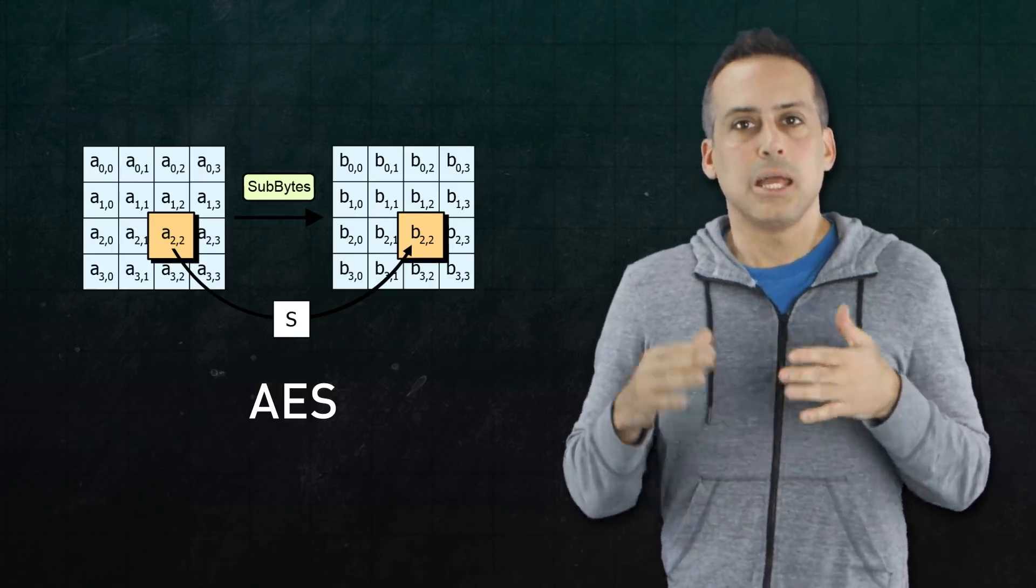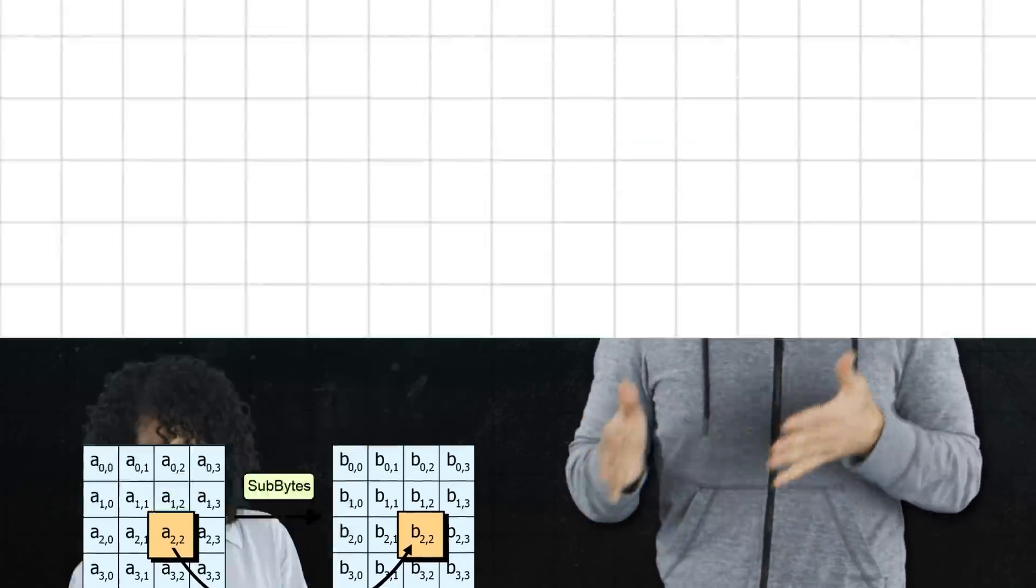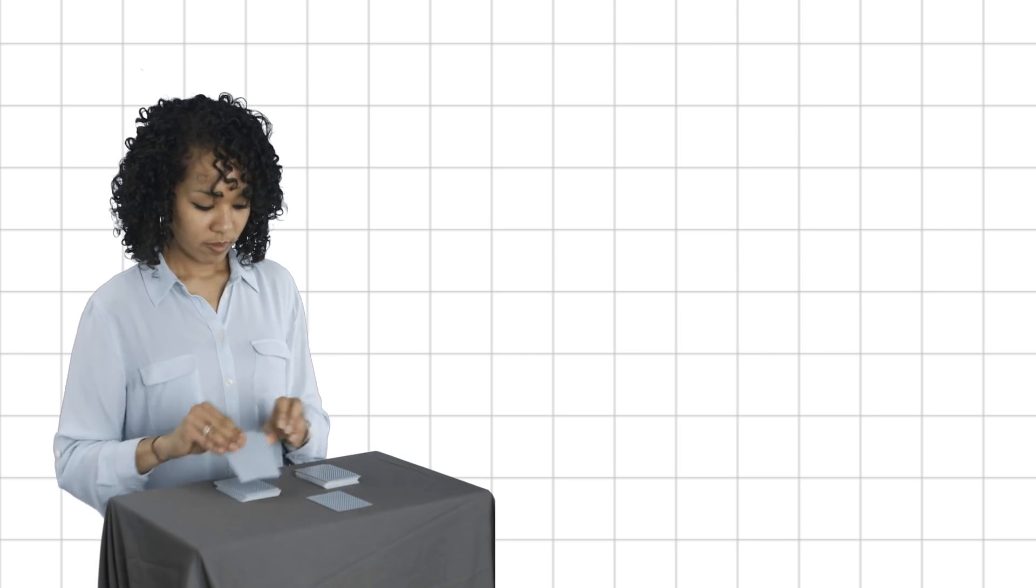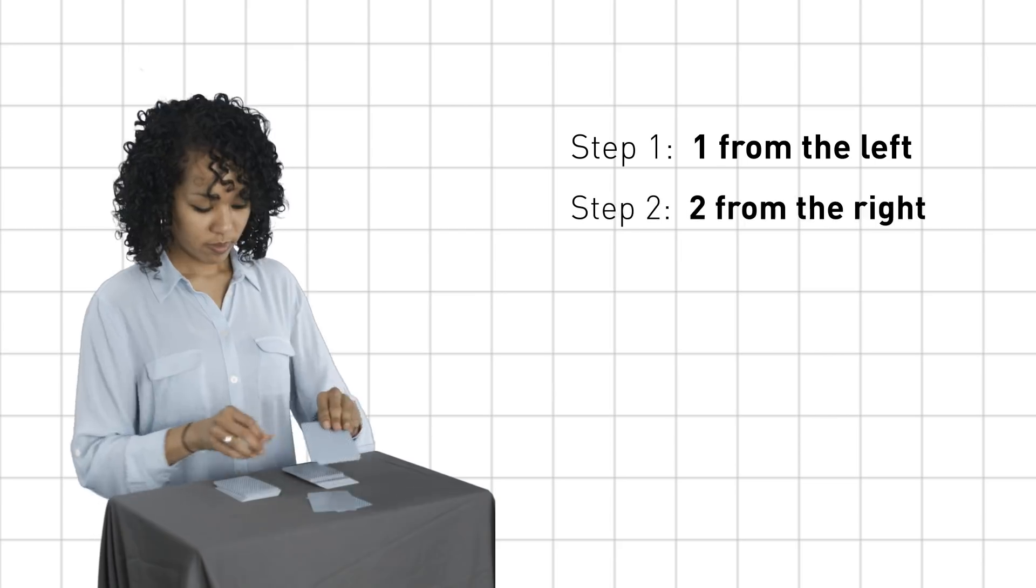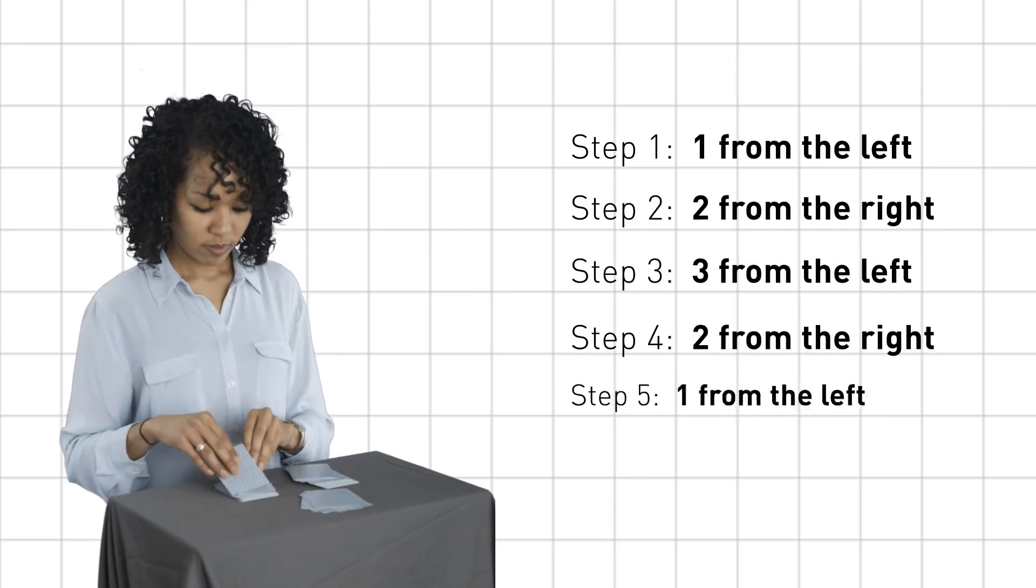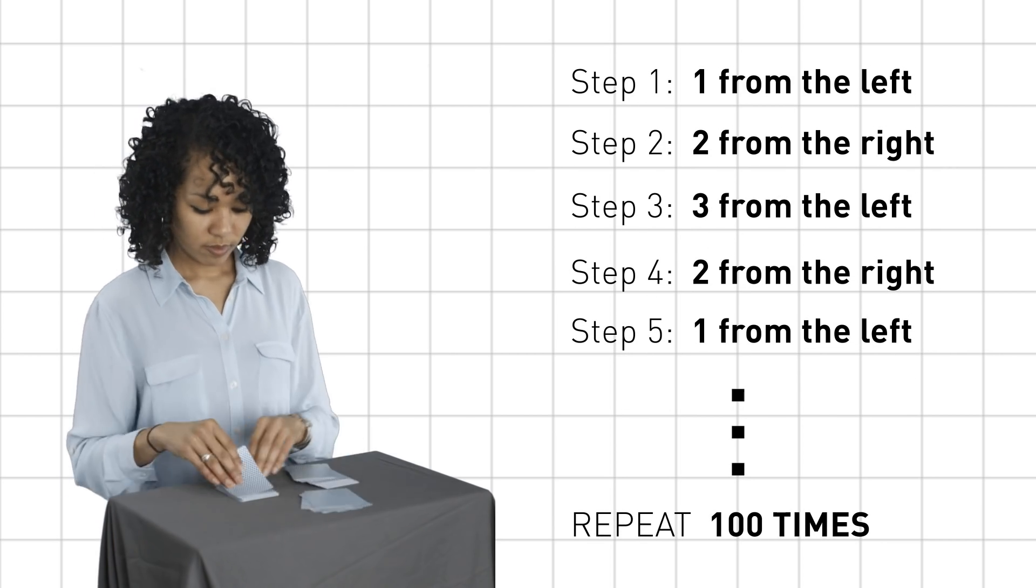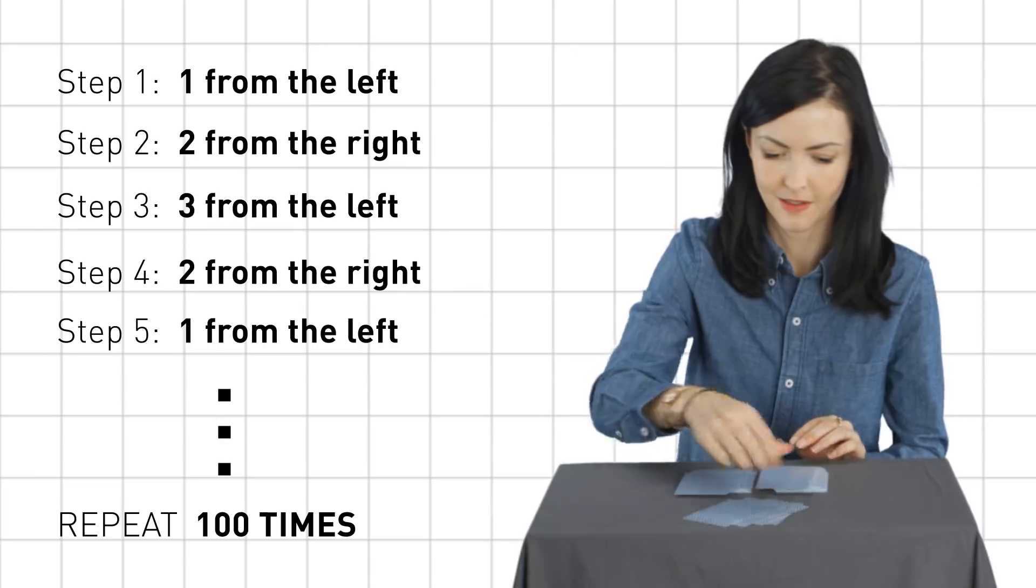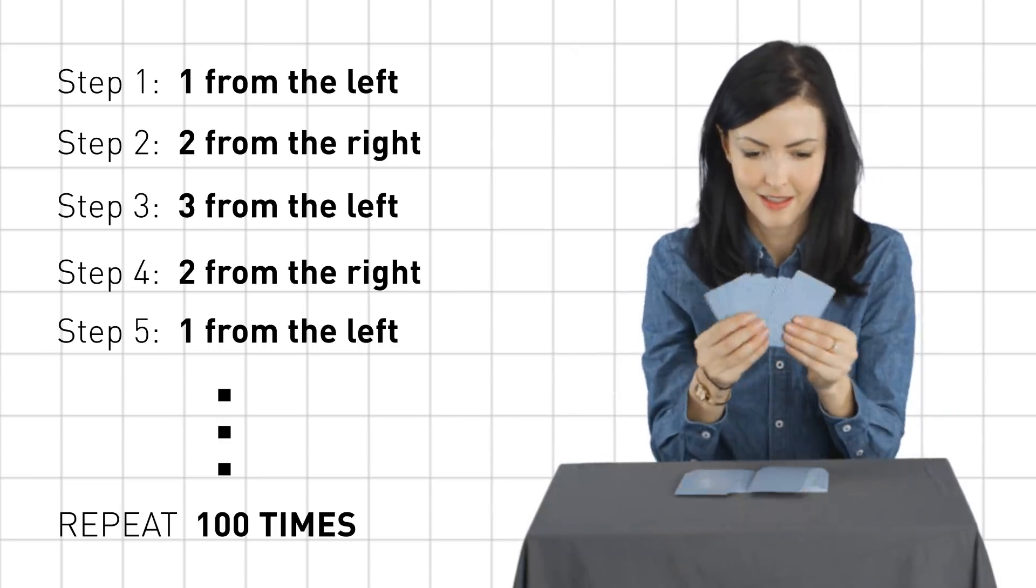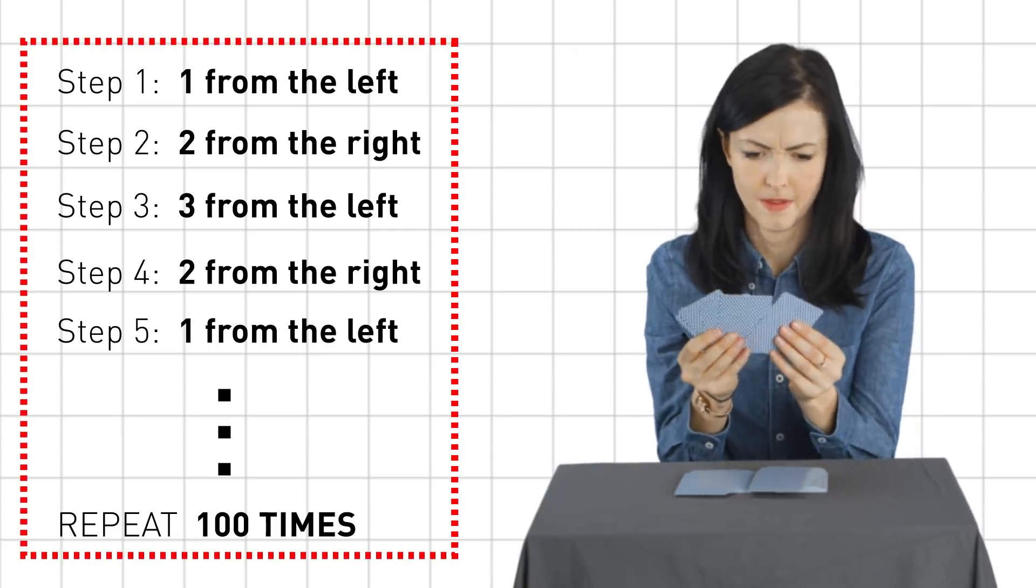Here's a rough analogy. Imagine that Alice has a deck of cards arranged in some meaningful order that she wants to send to Bob. She cuts the deck in half and shuffles the halves together according to some rule, maybe one from the left, then two from the right, then three from the left, then two more from the right, then back to one from the left, and so forth. Now she shuffles the deck like this 100 times and hands the scrambled deck to Eve. Even if Eve knew that 100 rounds of shuffling had taken place, it would be a nightmare to recover the original card sequence unless she also knew the shuffling rule so that she could apply it in reverse.